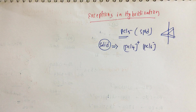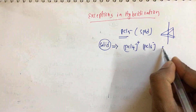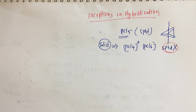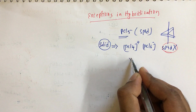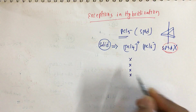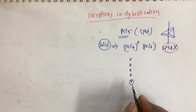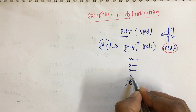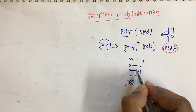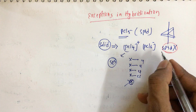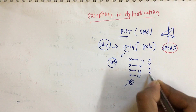We cannot say the hybridization of solid PCl5 is sp3d — that would be wrong. We have to find the hybridization of both ions. Phosphorus is a fifth group element, and with a positive charge we remove one electron, so it coordinates with four chlorine atoms. Total bonding electrons are four, giving sp3 hybridization for PCl4+.